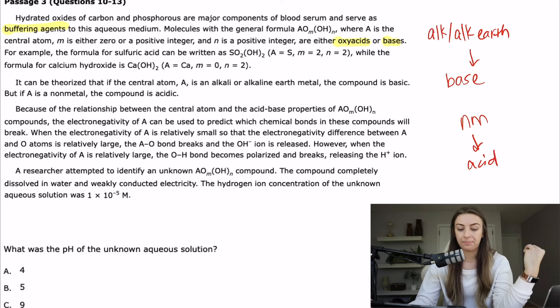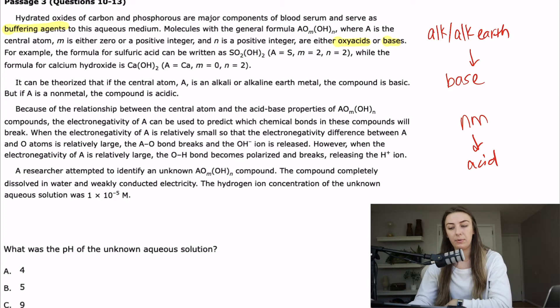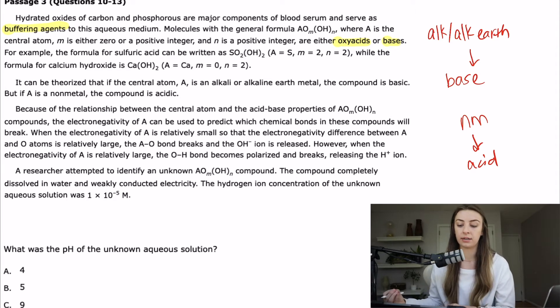Because of the relationship between the central atom and the acid-base properties of AO(m)OH(n) compounds, the electronegativity of A can be used to predict which chemical bonds in these compounds will break. When the electronegativity of A is relatively small so that the electronegativity difference between A and O atoms is relatively large, the A-O bond breaks and the OH minus ion is released. That's basically saying the same stuff as the previous part, because where are the low electronegativity atoms or elements on the periodic table? They're on the left side where the alkali and alkaline earth metals are. So that's just saying that it's going to release an OH minus ion and therefore be considered a base.